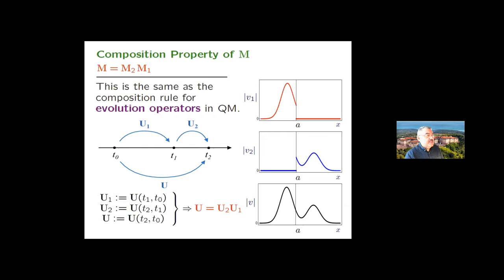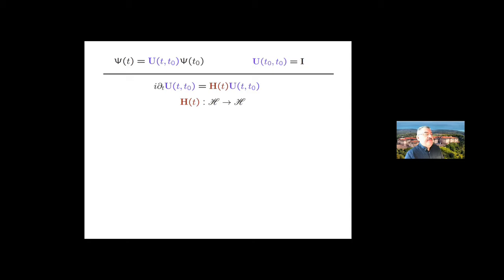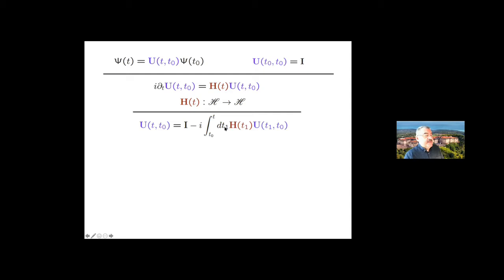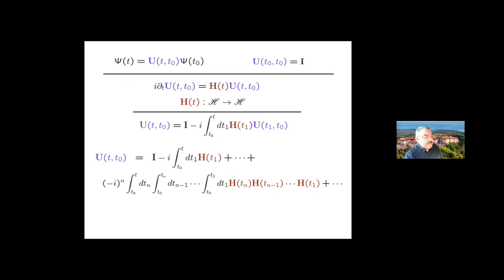When you have a general time-independent Hamiltonian, the evolution operator satisfies the Schrödinger equation with T0 as initial time. You can write the Schrödinger equation as an integral equation and repeatedly use this to calculate the evolution operator, giving the Dyson series. You identify this with the time-ordered exponential of the integral of the Hamiltonian. This is the formal solution, which you usually calculate using perturbation theory or other means.